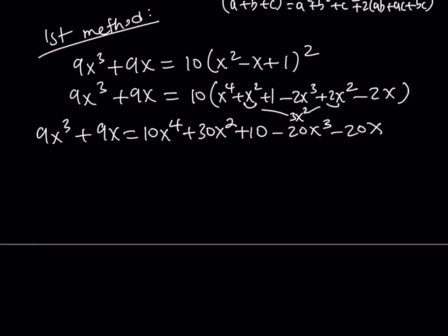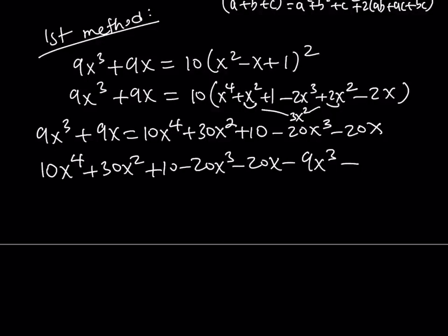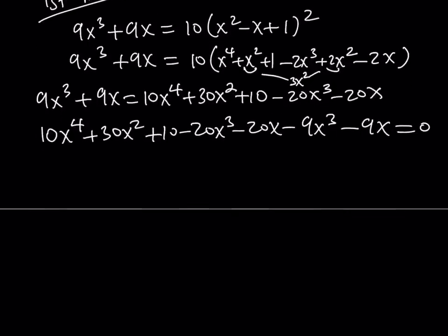I'd like to put everything on the same side but I want x to the fourth to be positive. Therefore, let's put everything on the right-hand side. So, that's going to give me 10x to the fourth minus 9x cubed. Let's put everything on the same side first and now I'll take care of the like terms. And the whole thing goes to zero. We're getting 10x to the fourth and then negative 20x cubed minus 9x cubed is going to give me negative 29x cubed.